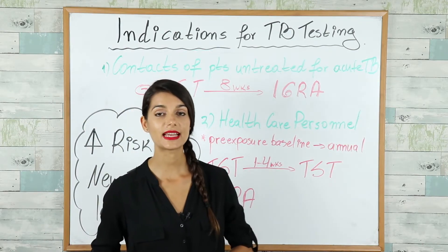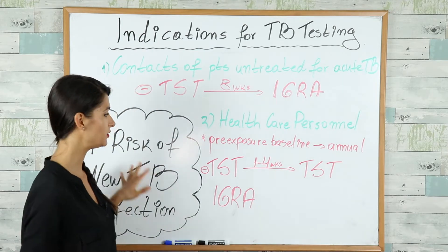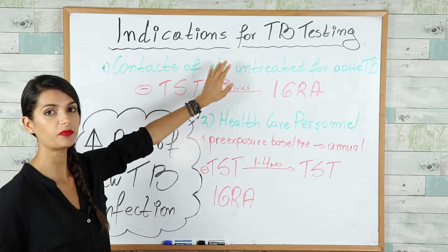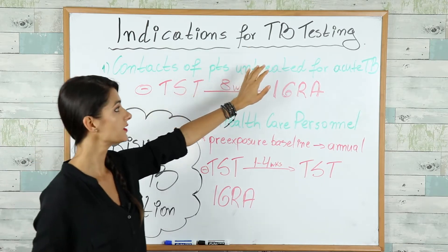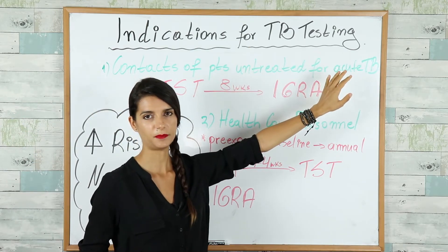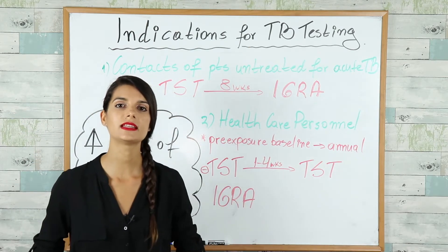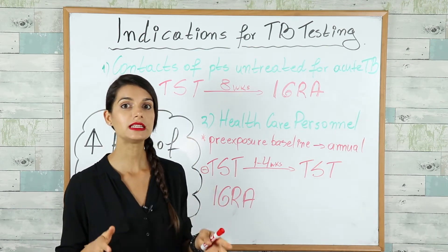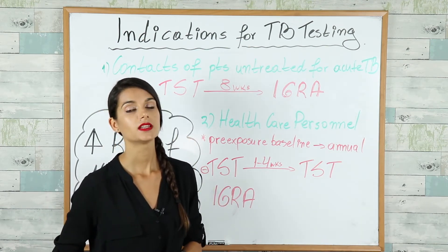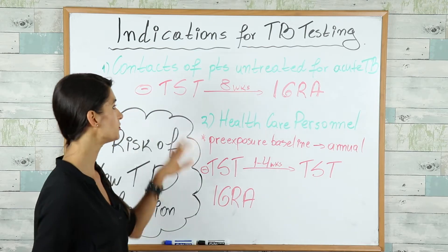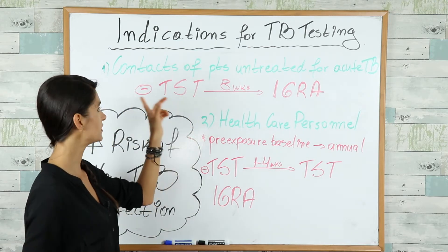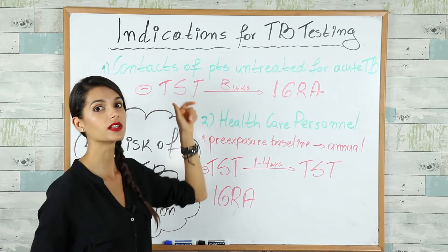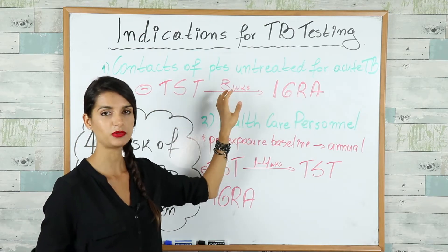The first group at increased risk of new TB infection includes close contacts of patients with untreated acute respiratory TB — defined as contact with the TB patient for at least four hours per week. The preferred testing method is the tuberculin skin test, and if the first test is negative, we must confirm with an IGRA test eight weeks later.